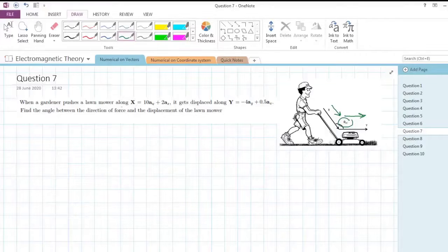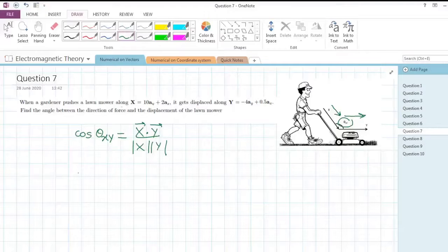To find out the angle between x and y, the process will be the same that we did earlier. We have the formula of dot product, and if you reshuffle it you will get cos theta_xy = (x·y) / (|x||y|).